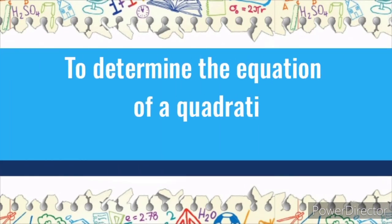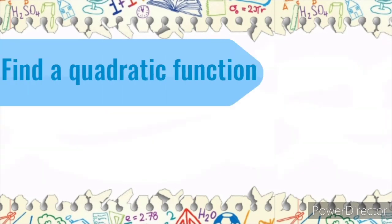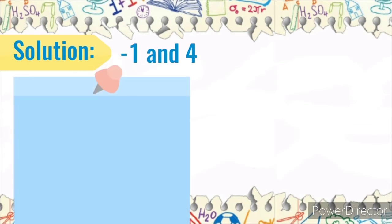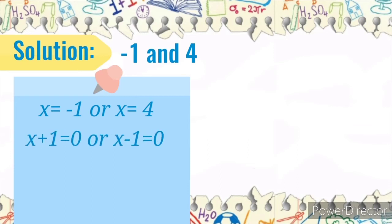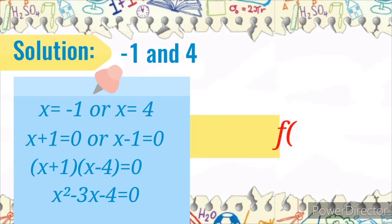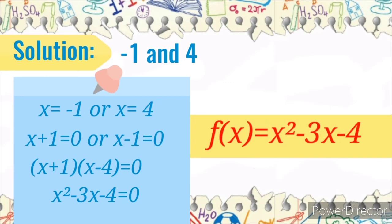To determine the equation of a quadratic function given the zeros. Find a quadratic function whose zeros are negative 1 and 4. Solution: If the zeros are negative 1 and 4, then x equals negative 1 or x equals positive 4. It follows that x plus 1 equals 0 or x minus 4 equals 0. Then x plus 1 times x minus 4 equals 0, giving x squared minus 3x minus 4 equals 0. The equation of the quadratic function is f(x) = x² - 3x - 4.